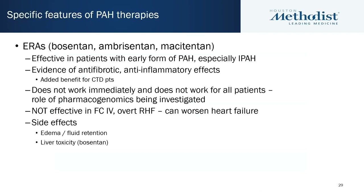ERAs are effective in early PAH but can cause volume retention, so caution is needed in actively decompensating patients. There is added value in patients with connective tissue disease and congenital heart disease. Most PAH therapies were first tried in Eisenmenger's syndrome; bosentan, an endothelin receptor antagonist, is very effective in congenital heart disease patients.